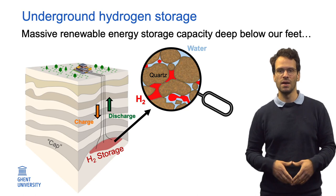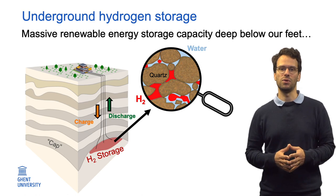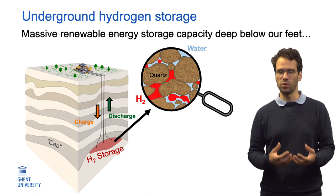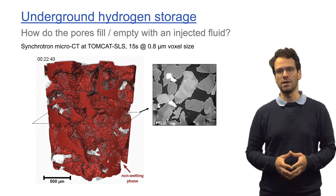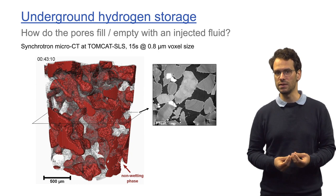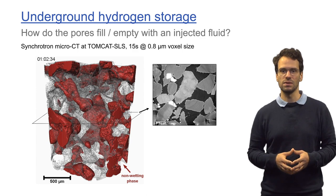Another example of fluid flow in porous materials is underground hydrogen storage. The idea is to produce hydrogen when renewable energy is cheap, for example when the sun shines, and then store it for later use in a porous rock layer more than a thousand meters deep underground. This rock holds the hydrogen in its pores, like a sponge. To use this method, we have to understand how the hydrogen will fill the pores that are initially filled with saline groundwater. To study such fluid movements, we use fast microCT imaging to make 3D movies, here of this fluid in red being pushed out by water. We do this both in the lab at UGCT and at synchrotrons such as the Swiss Light Source shown in this video.